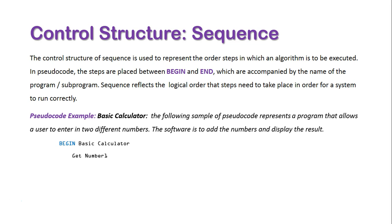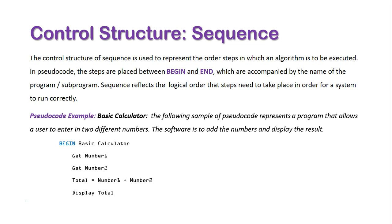Then we have the sequence of steps: get number one, get number two, total equals number one plus number two, display total, and then we close off this program with end and the name of the program once again — basic calculator. I hope that gives you a bit of an outline of sequence in the use of pseudocode.